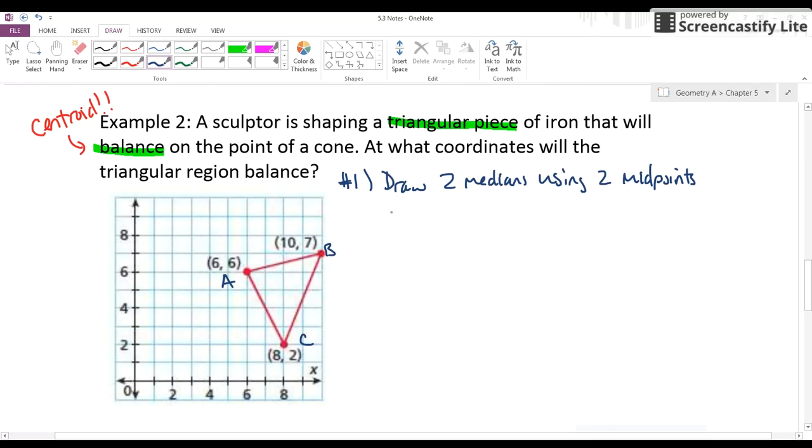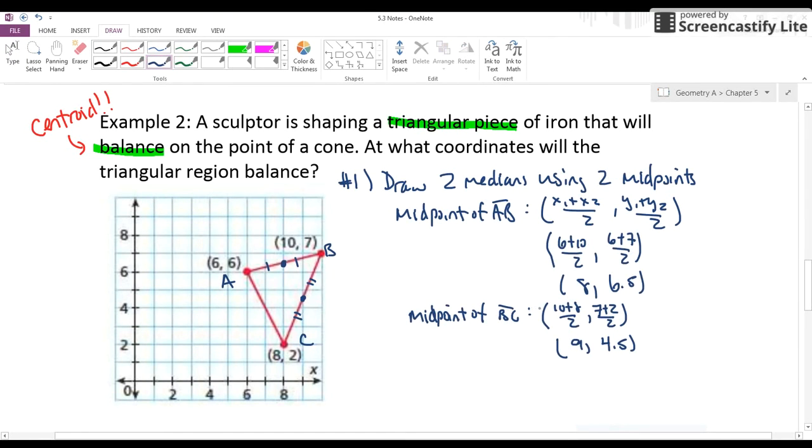Use your midpoint formula, x1 plus x2 over 2, y1 plus y2 over 2, and find that midpoint. And I'm going to find the midpoint of AB and BC. So there's my midpoint work, finding the midpoint of AB, which is 8 and 6.5, the midpoint of BC, which is 9 and 4.5.